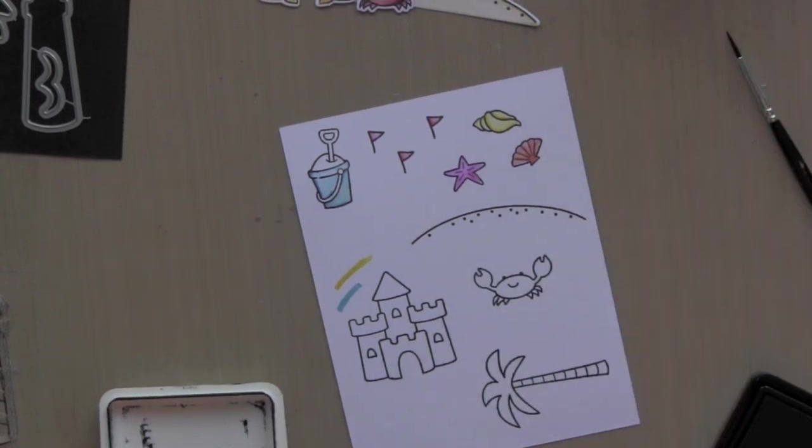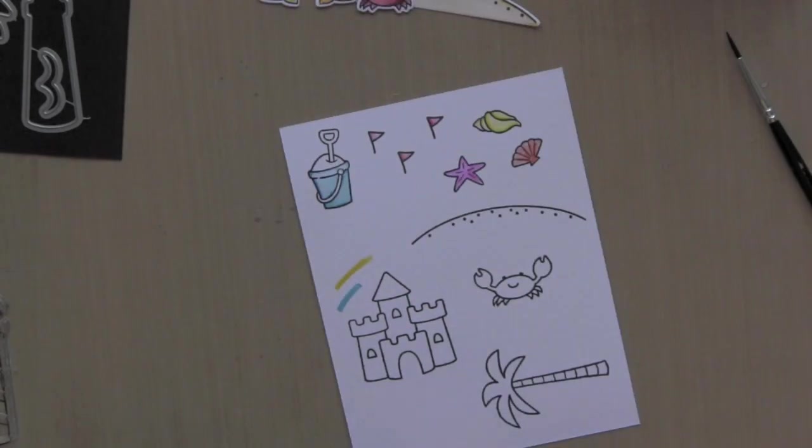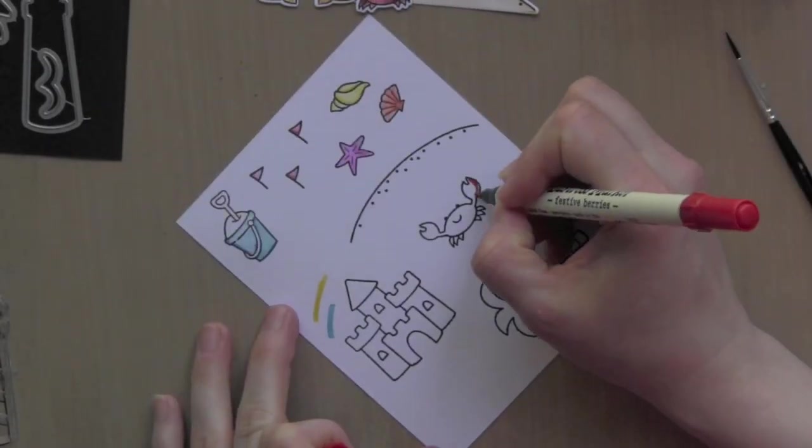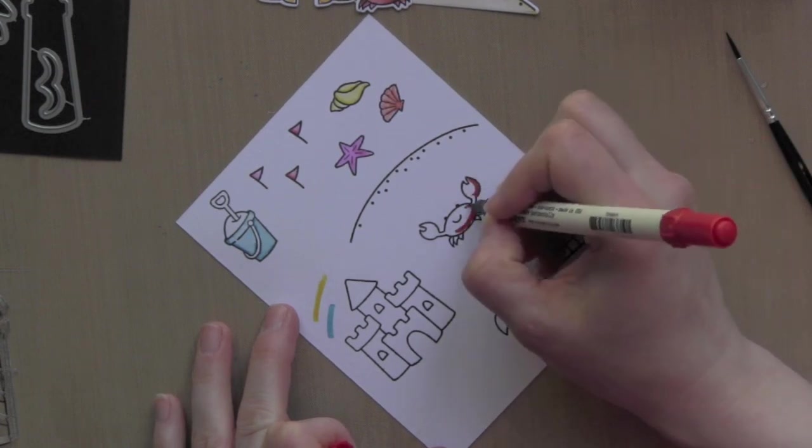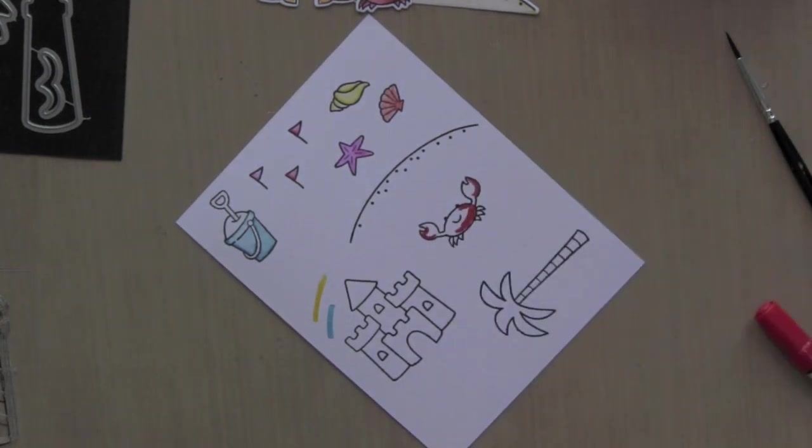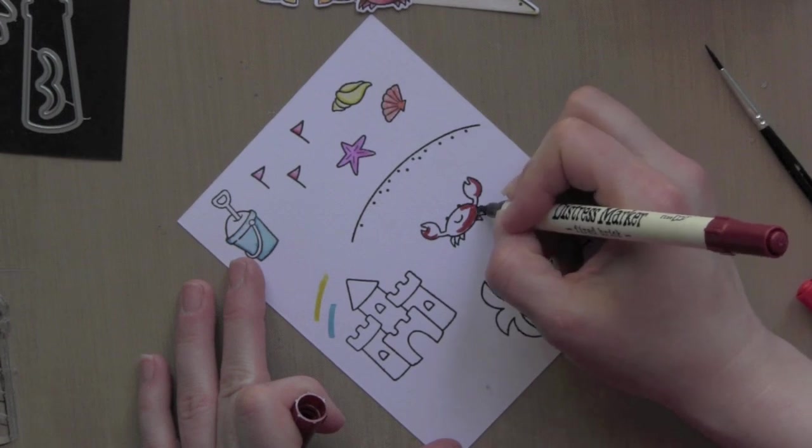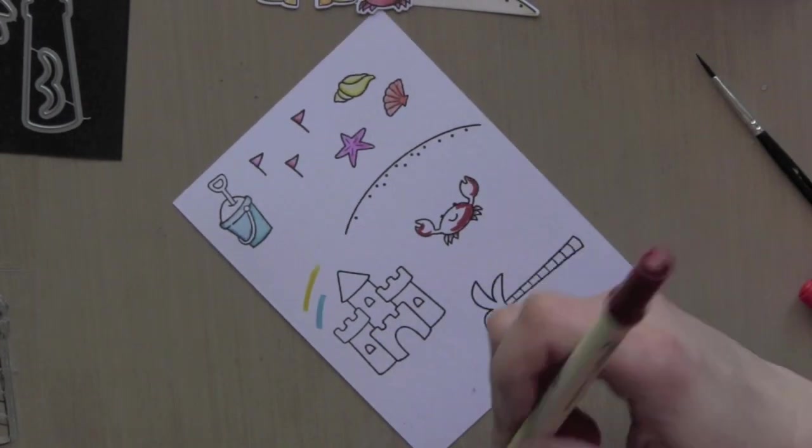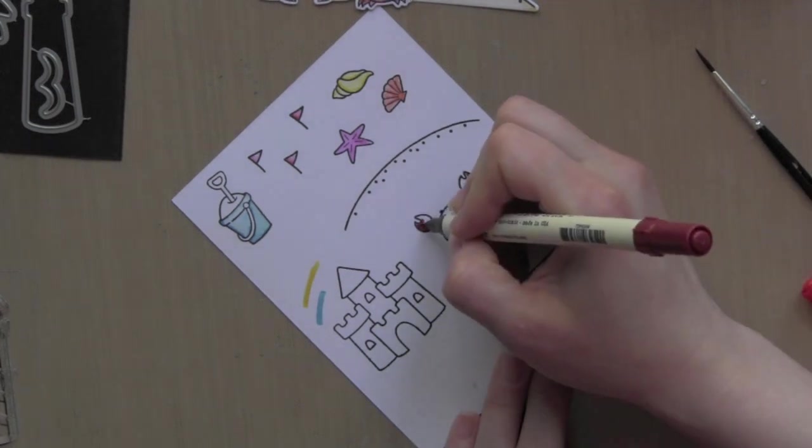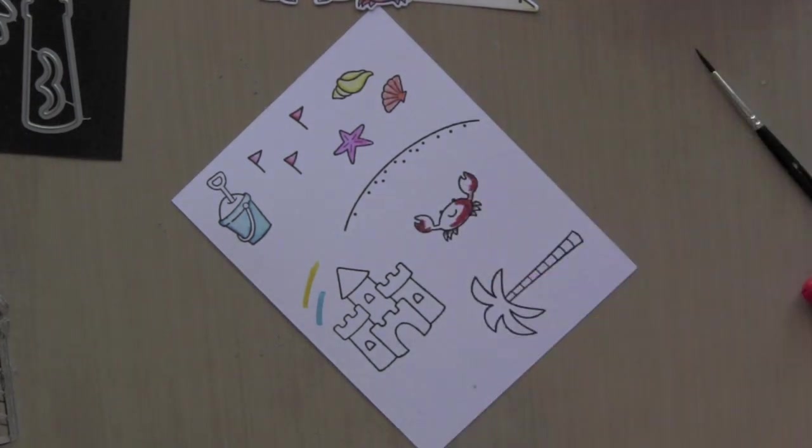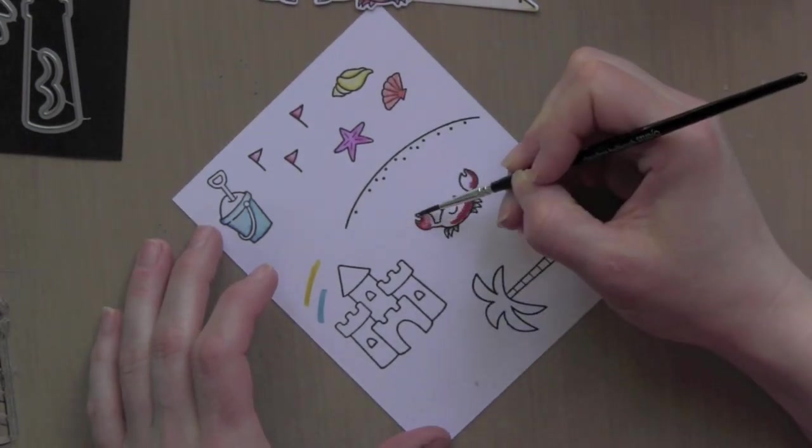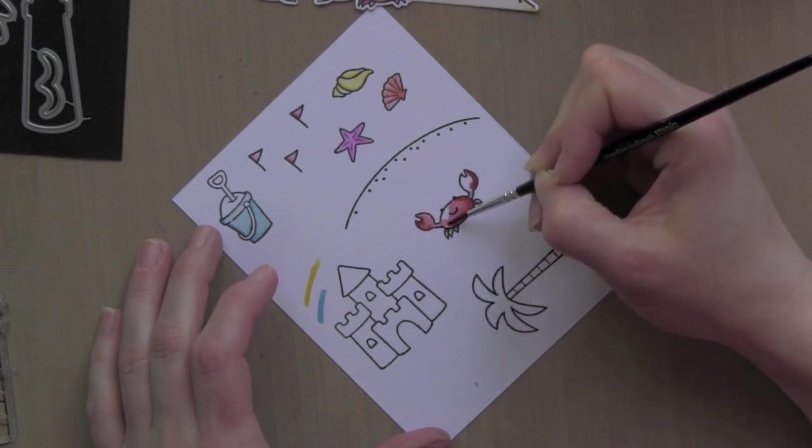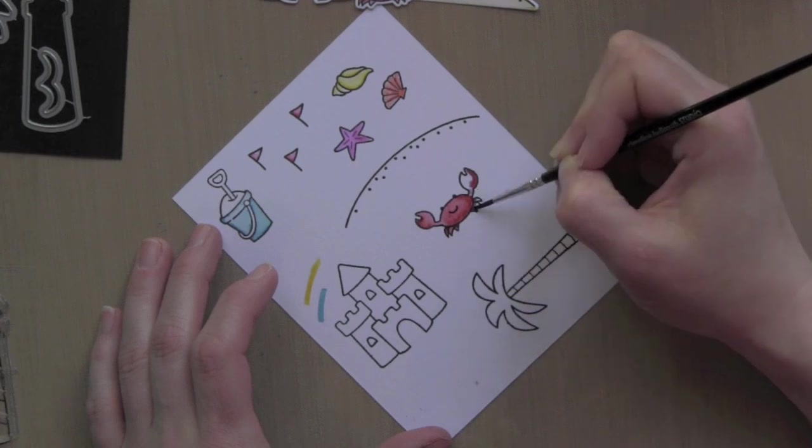Because I'm going to be die cutting all of these out, I don't need to worry about placement exactly. I'm using festive berries for the crab and also a little fired brick, combining both of these. My fired brick marker looks like it might be a little bit dry. I probably need a new one. Going to spread that around and you can just see what a great watercolor effect this gives.